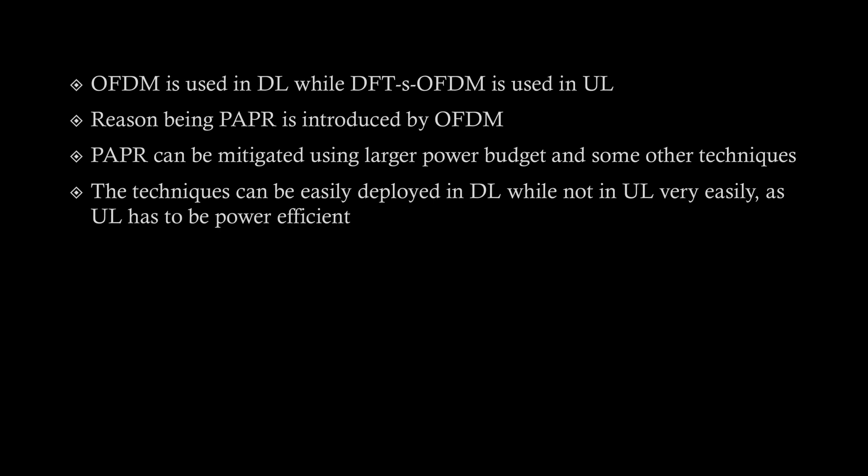To understand this: in downlink the transmitter is the base station, where there is no power scarcity. But in uplink the transmitter is the UE, and to make the UE more battery efficient, we can't use much of the power budget. So PAPR is a critical issue in uplink.